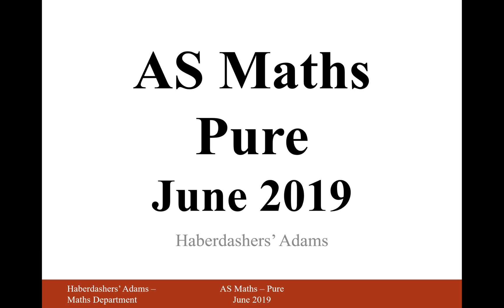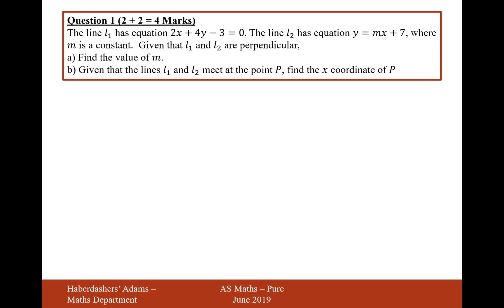Hello there and welcome to the AS Maths June 2019 paper. Here we're looking at question 1. The line L1 has equation 2x plus 4y minus 3 equals 0. The line L2 has equation y equals mx plus 7, where m is a constant. Given that L1 and L2 are perpendicular, find the value of m.